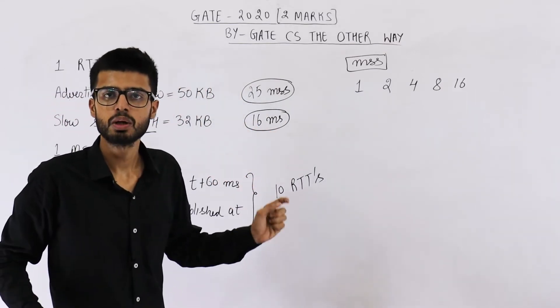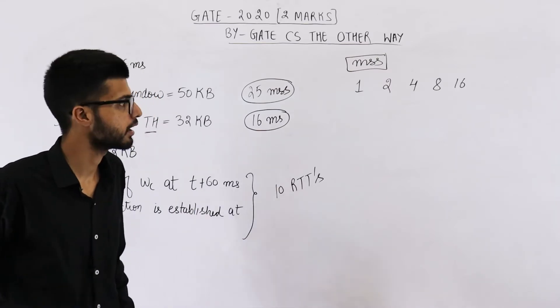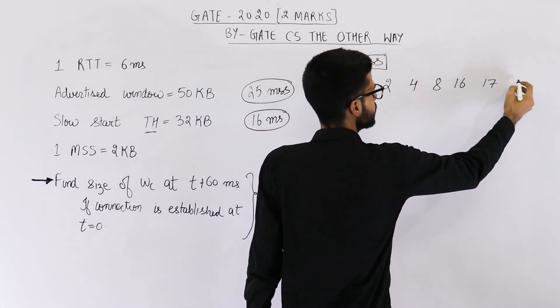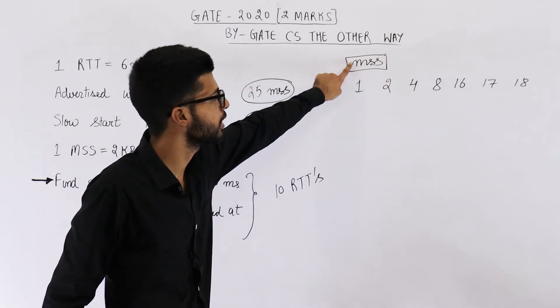Now we have reached this threshold. When you reach the threshold, after that, just increase the size by 1 after every RTT. So now you will increase the size by 1. That means 17, then 18. 18 what? What is the unit? Unit is MSS.